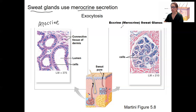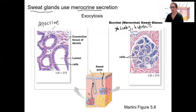Eccrine is your typical sweat gland — watery, hypotonic compared to the blood, involved in thermoregulation, as well as a small role in excretion of wastes. Apocrine is the one that produces thicker, stickier stuff. It's actually produced from blood plasma with proteins and fats added in. It's stinkier.